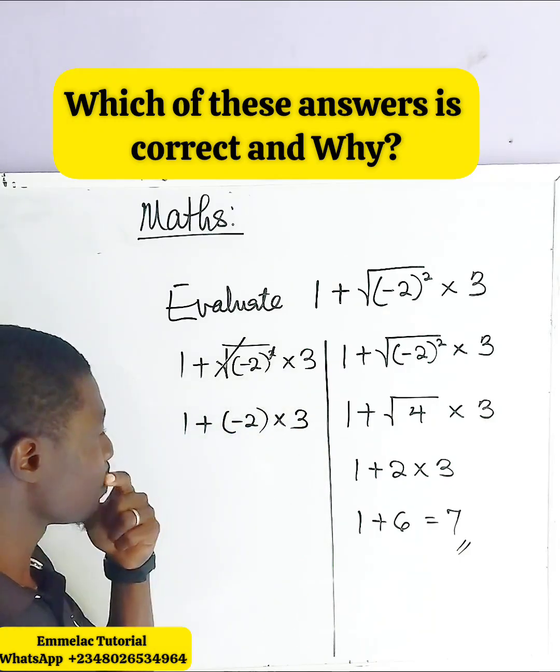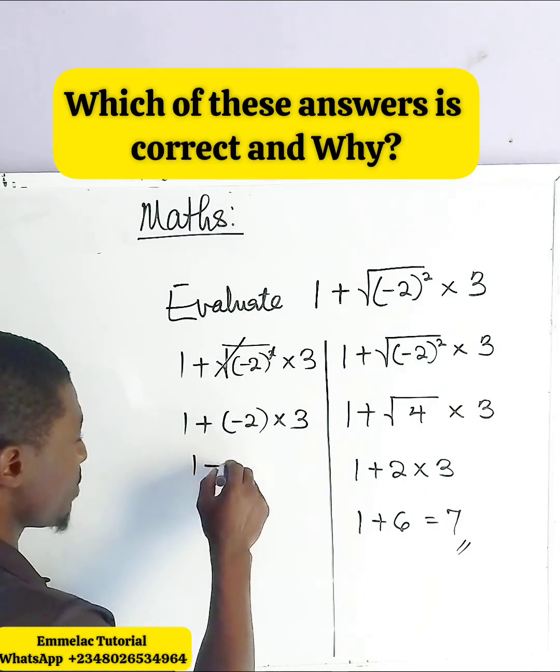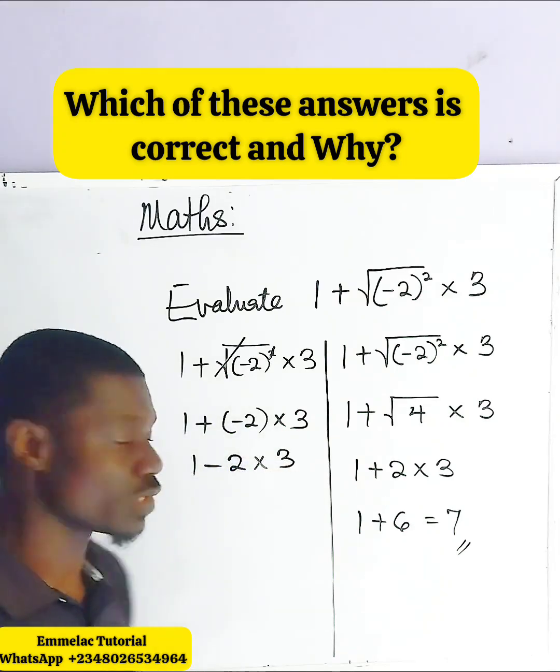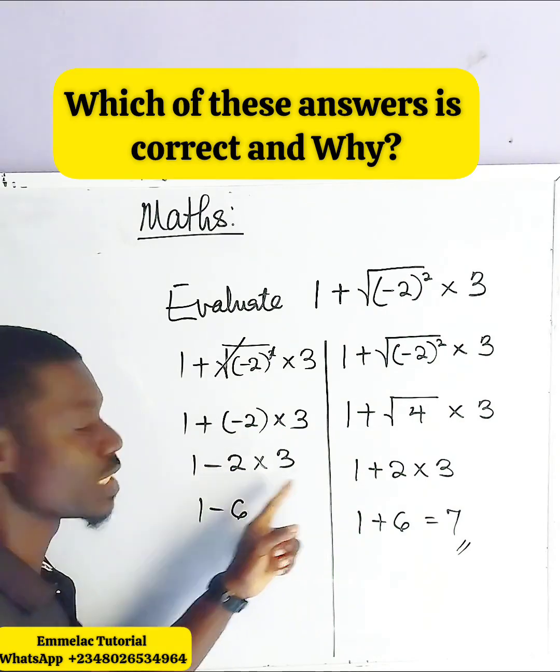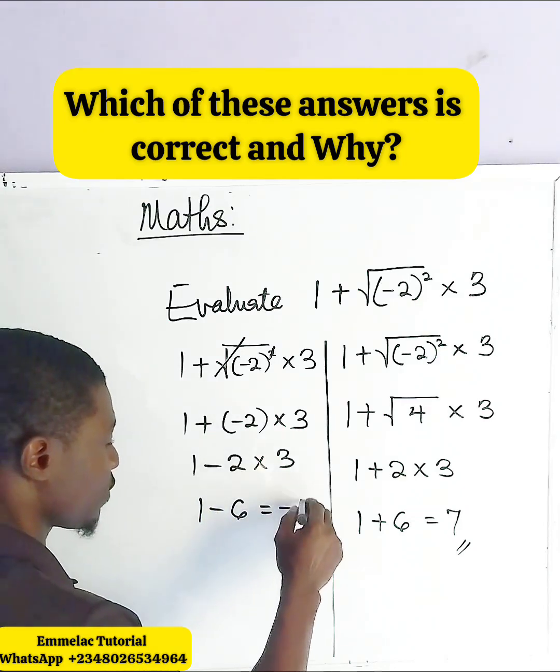Now opening the bracket here, we have 1 minus 2 times what? 3. Now I'm going to also multiply, 1 minus 6, right? Because 3 times 2 here, we have 6. Then this will give us what? Negative 5.